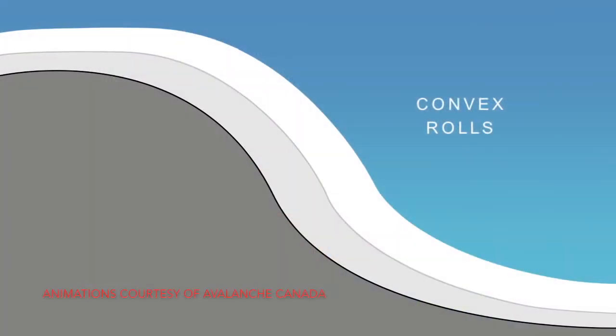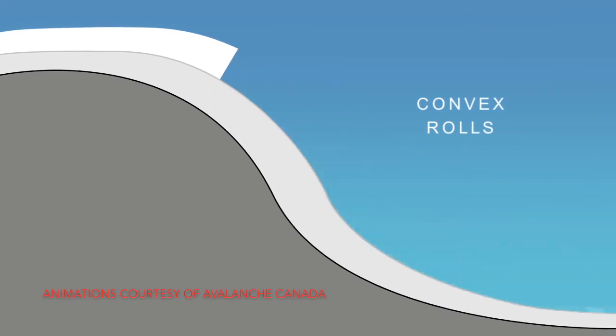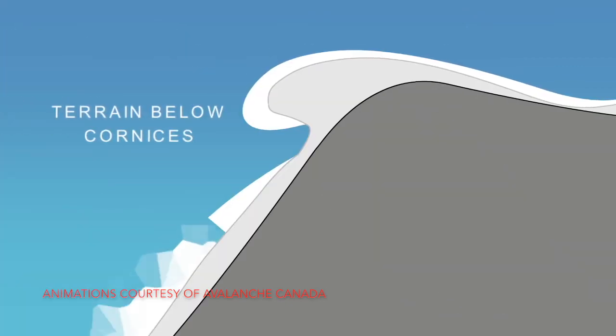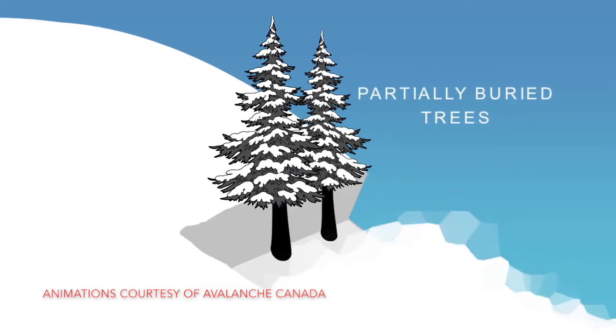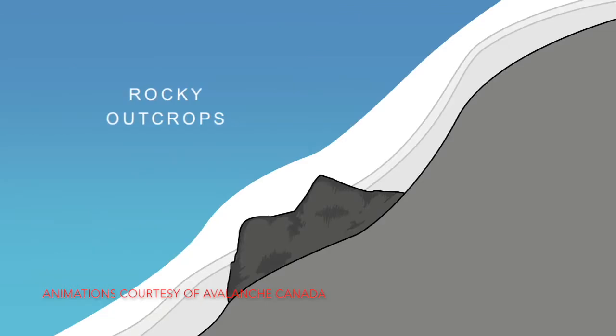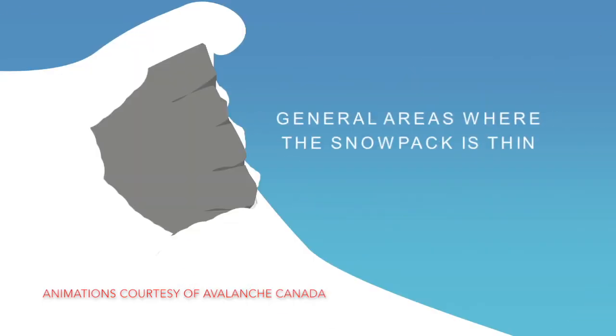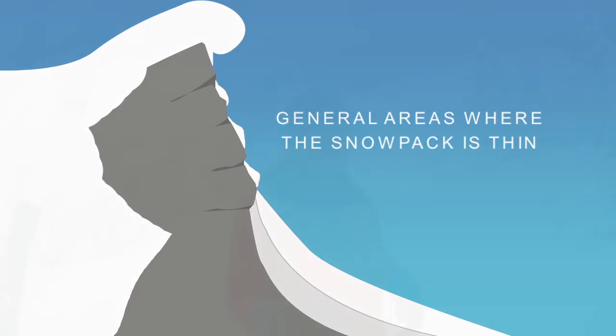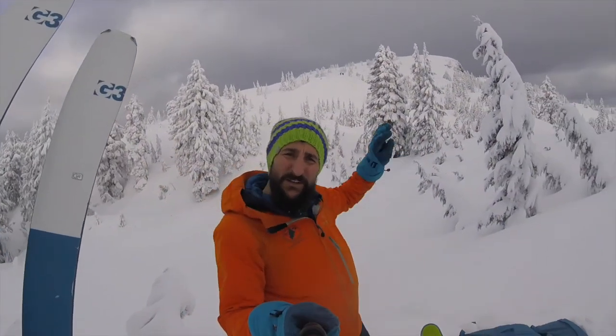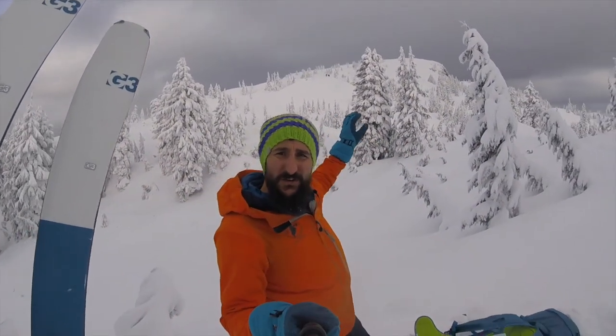In addition to snowpack considerations, we also need to be aware of likely trigger points within the terrain — for example, on convex rolls, beneath cornices, around partially buried trees, rocky outcrops, or where the snowpack is generally thin and shallow. These are all areas that, when located in the start zone of an avalanche path, we want to avoid.